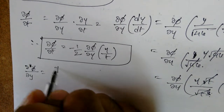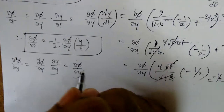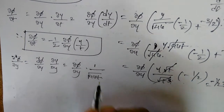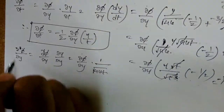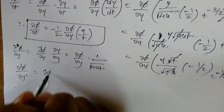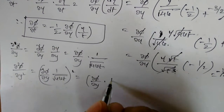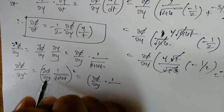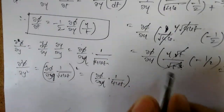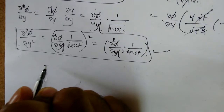Similarly, ∂φ/∂y = (dφ/dη)(∂η/∂y) = (dφ/dη)(1/√(4νt)). Then ∂²φ/∂y² = (d²φ/dη²)(1/(4νt)). Substituting both ∂φ/∂t and ∂²φ/∂y² into the PDE, the ν terms cancel, and simplifying gives the ODE: d²φ/dη² + 2η(dφ/dη) = 0.